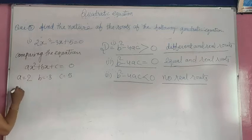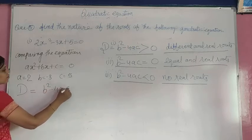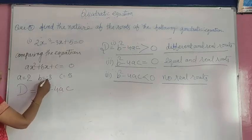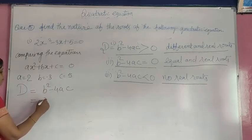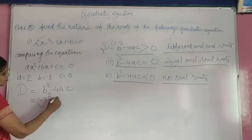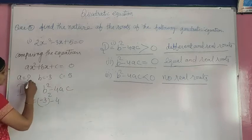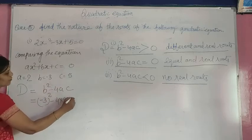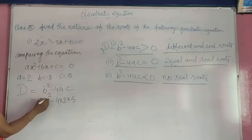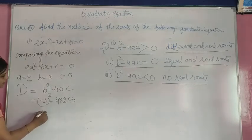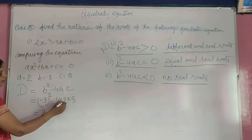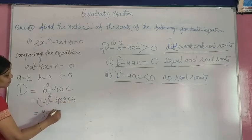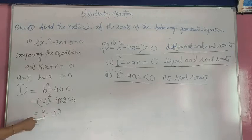Put this value. Discriminant D is equal to b² - 4ac. Putting the value, B is equal to -3, so (-3)² minus 4 times A is equal to 2 times C is equal to 5. (-3)² is 9. Minus 4 times 2 is 8, times 5 is 40. 9 - 40 is -31.